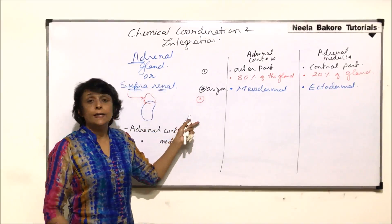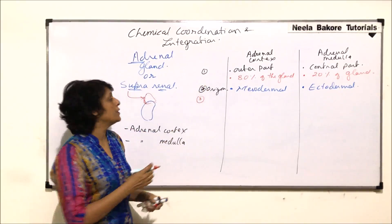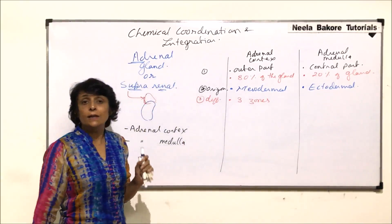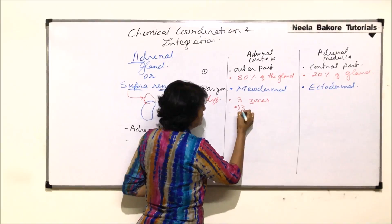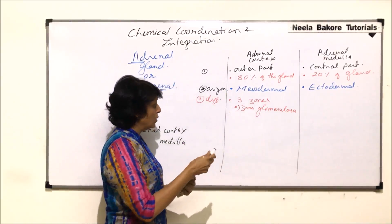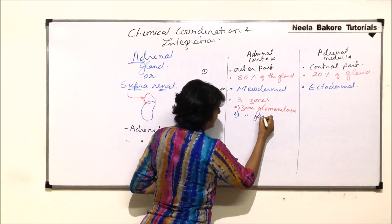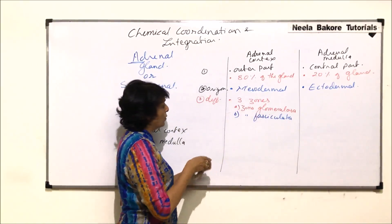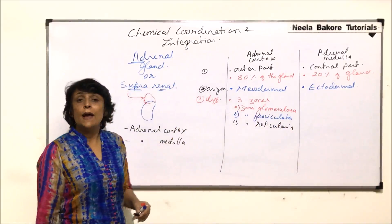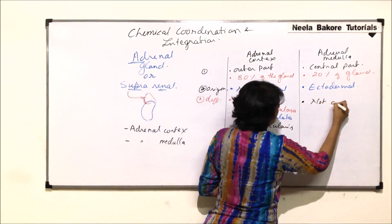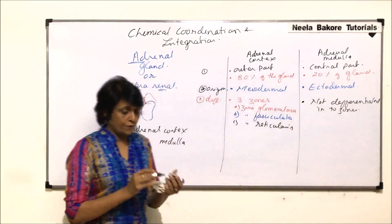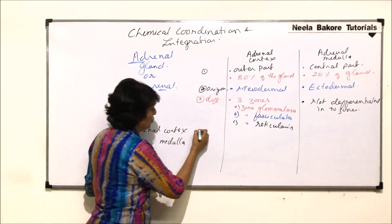The third point is differentiation. The adrenal cortex is differentiated into three zones: zona glomerulosa, zona fasciculata, and zona reticularis. In contrast, the adrenal medulla is not differentiated into zones — it is just one mass of cells.